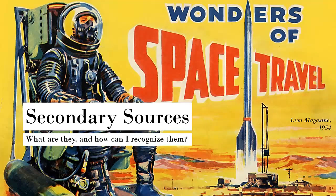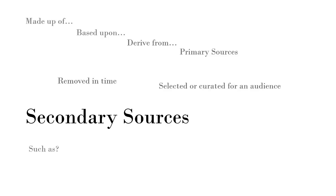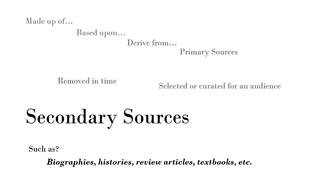You may now be wondering what are secondary sources and how can you begin to recognize them? Secondary sources are made up of, based upon, or derived from those primary sources we just learned about. Secondary sources tend to be more removed in time as a measure of distance, and the sources within are selected specifically for an audience, often with the author adding some form of analysis or wider context. Secondary sources can include biographies, histories, review articles, textbooks — really anything that couldn't exist without lots of primary sources as the basis.